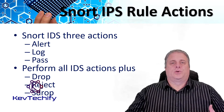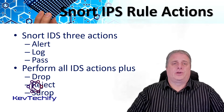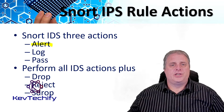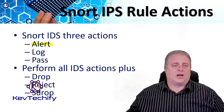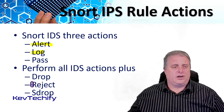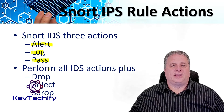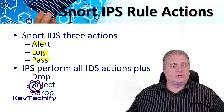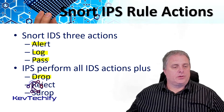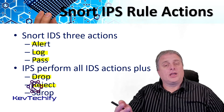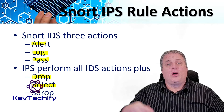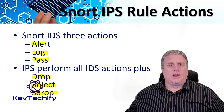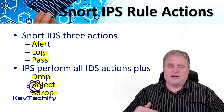Snort can be enabled in IDS mode or IPS mode. In intrusion detection system mode, Snort can perform three actions: alert — generate an alert using the selected alert method and log the packet; log — log the packet; or pass — ignore the packet. Snort IPS mode can perform all IDS actions plus additional ones: drop — block and log the packet; reject — block the packet, log it, and send a TCP reset if the protocol is TCP, or an ICMP port unreachable message if the protocol is UDP; or sdrop — block the packet but don't log it.